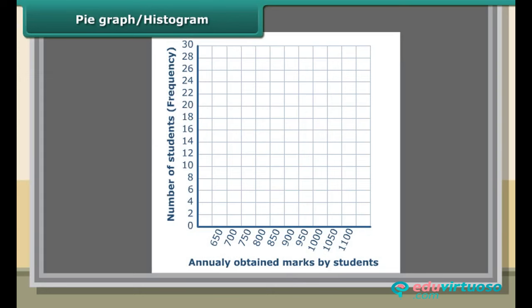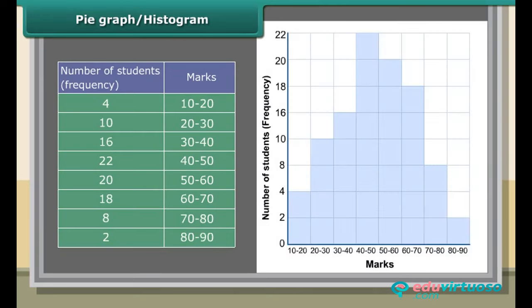Histogram: A histogram is a graphical representation of a frequency distribution in the form of rectangles with class intervals as bases and heights proportional to corresponding frequencies such that there is no gap between any two successive rectangles. The following table gives the marks scored by 100 students in an entrance examination.